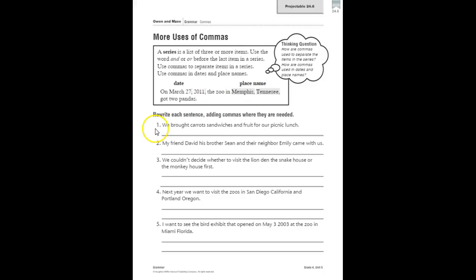Let's look at a few more examples. We bought carrots, sandwiches, and fruit for our picnic lunch. Here we need to add commas where they're needed, and we have a series: we bought carrots comma sandwiches comma and fruit for our picnic lunch.